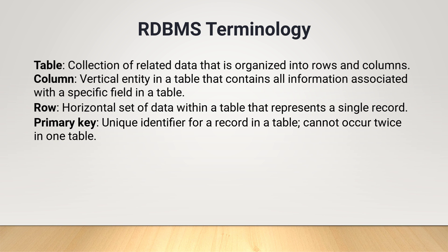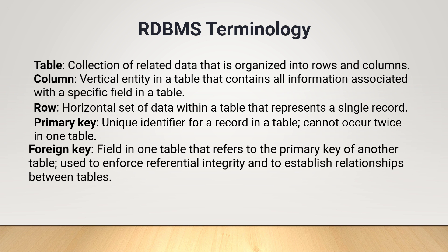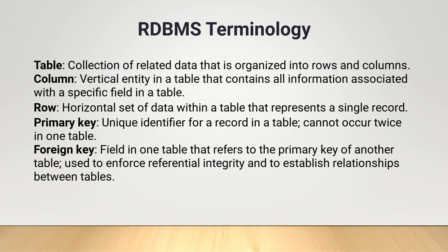Primary Key: a primary key is a unique identifier for a record in a table. A key value cannot occur twice in one table. It is used to enforce referential integrity between tables and to ensure that each record is uniquely identified. Foreign Key: a foreign key is a field in one table that refers to the primary key of another table. It is used to enforce referential integrity between tables and to establish relationships between tables.